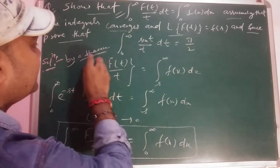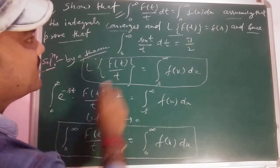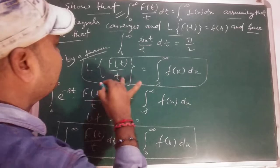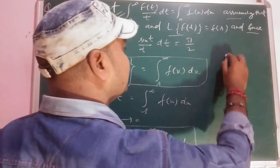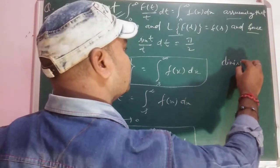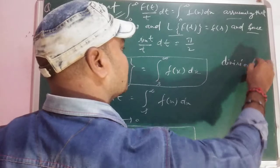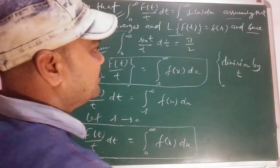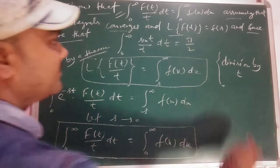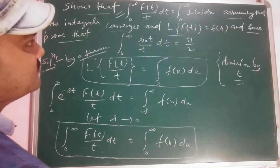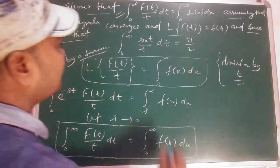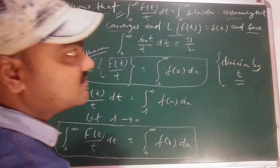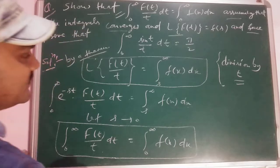This was simple — it was the power of the theorem. If we know the theorem, such questions become very easy. This was the division-by-t theorem. If you haven't studied it yet, you can check the playlist. Using that, this question was solved.